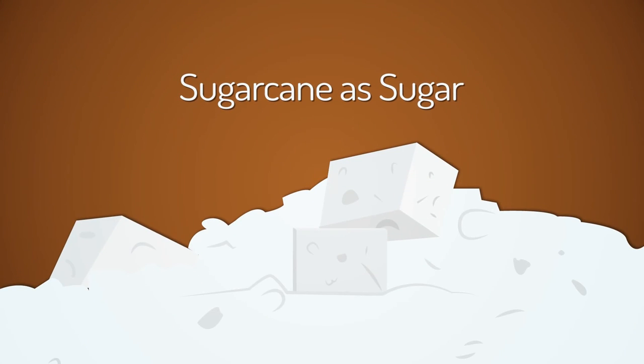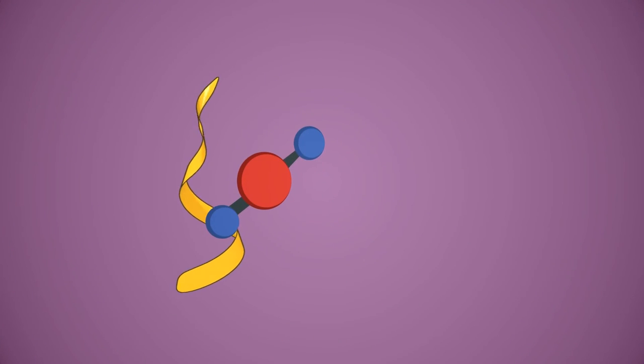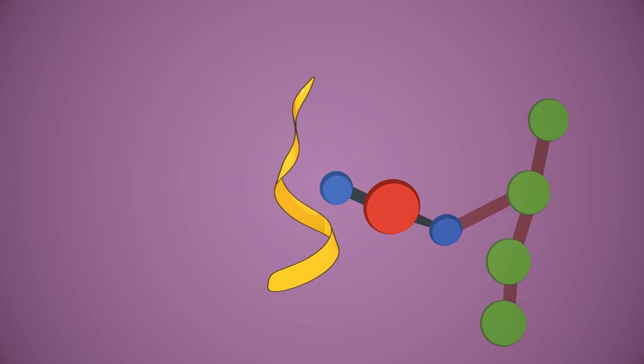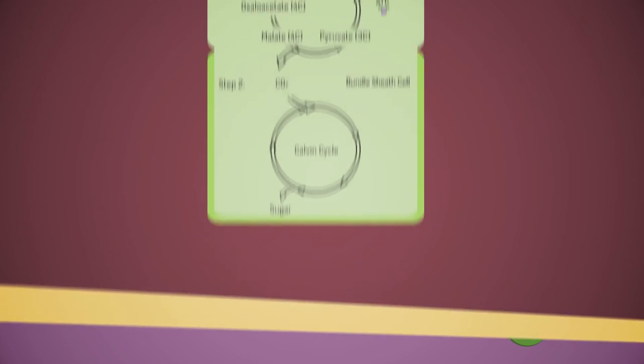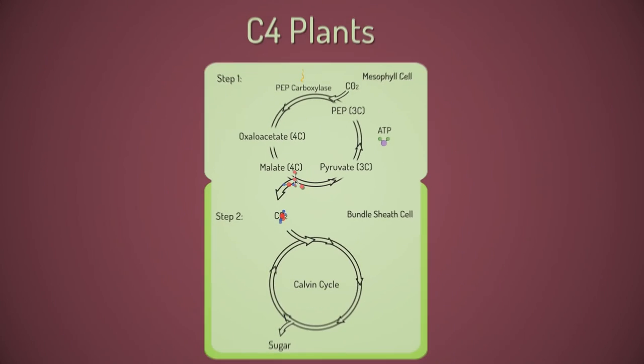Sugarcane is known as a C4 plant because the enzyme PEP carboxylase creates four-carbon molecules by fixing CO2 instead of three-carbon G3Ps. These four-carbon molecules are assembled when the stomata are partially open and then transported to the bundle sheath cells.